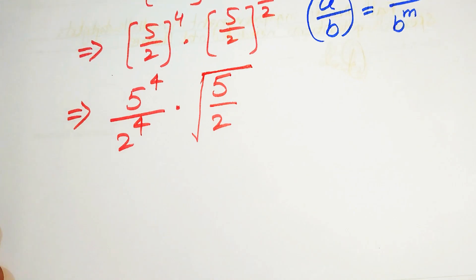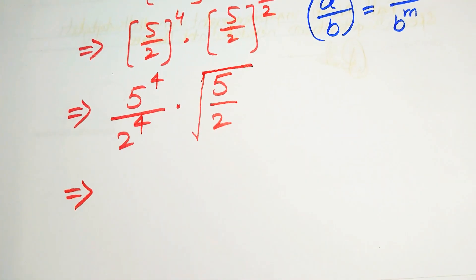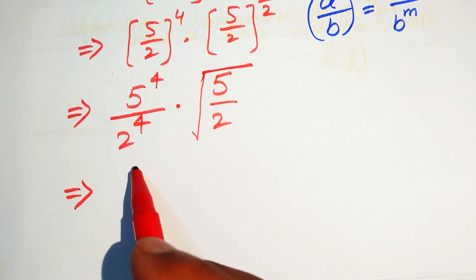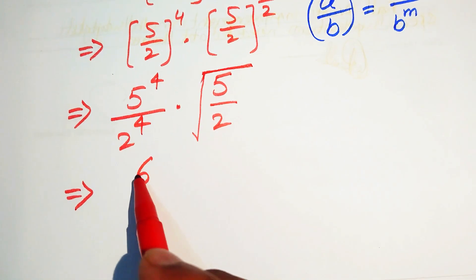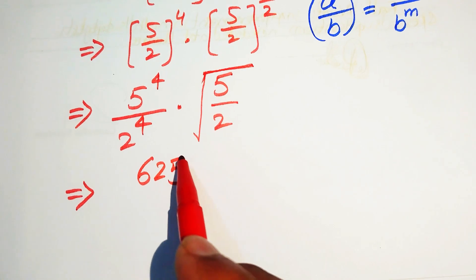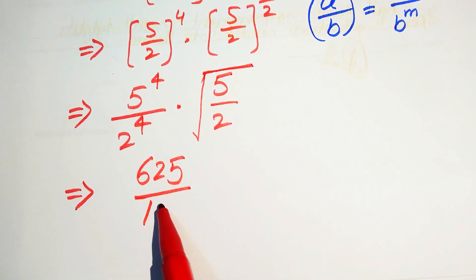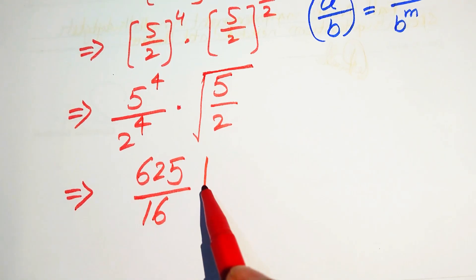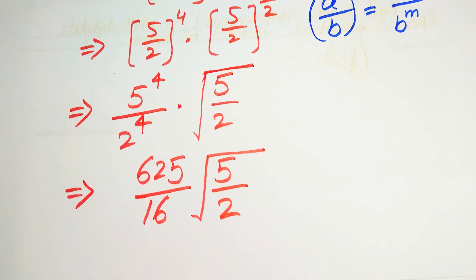We need more simplification. We know that 5 to the power of 4 equals 625, since we multiply 5 four times. When we multiply 2 four times we get 16. So we have 625 over 16 multiplied by the square root of 5 over 2.